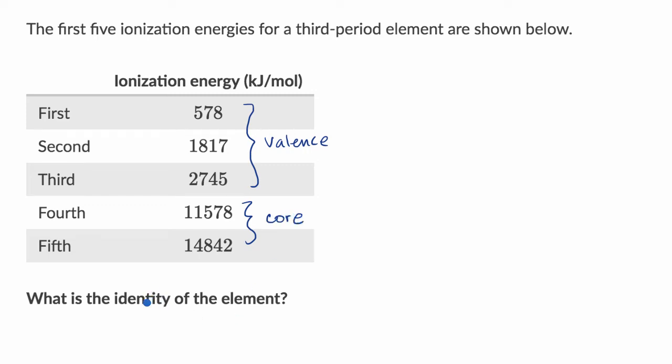And these look like you're removing core electrons. So one way to think about it is, let's look on our periodic table of elements and look for a third period element that has three valence electrons.